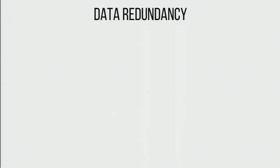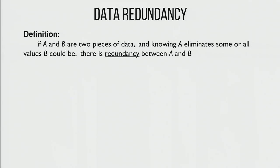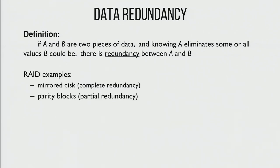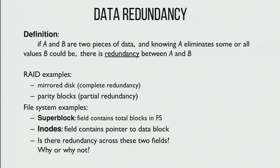First, data redundancy: if we have two pieces of data A and B, and we know what A is, it constrains what B could possibly be — there's some relationship across those two things. We saw lots of examples of this in RAID systems: RAID level 1 was mirroring, complete redundancy, and in RAID levels 4 and 5 there was redundancy with parity blocks computed across stripes, restricting what those blocks could be.